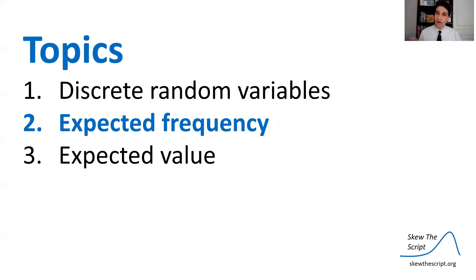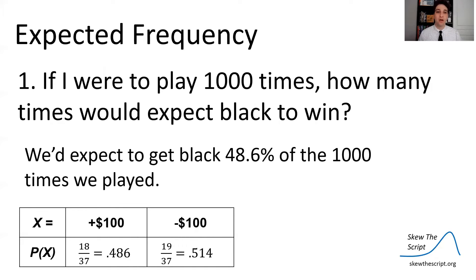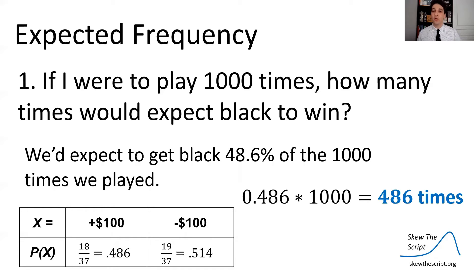Let's talk about expected frequency as one way to explore that variable. If I were to play roulette 1,000 times each time betting $100 on black, how many times would we expect black to win? We expect to get black 48.6% of the 1,000 times we play, so we multiply: 48.6% times 1,000 equals 486 times.